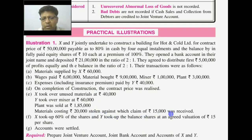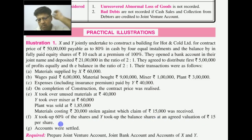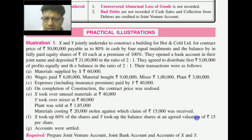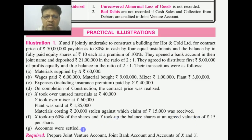After contract completion, X took over unused material, Y took over the mixture plant. Material worth Rs. 20,000 was stolen and the insurance company paid Rs. 15,000. X took over 60% of shares and Y took over the balance shares at an agreed valuation of Rs. 15 per share. With 50,000 total shares, X took over 30,000 shares at Rs. 15, and the accounts were then settled and closed.